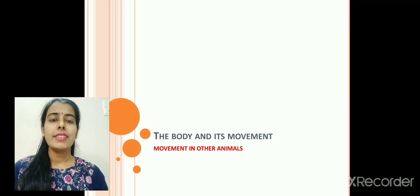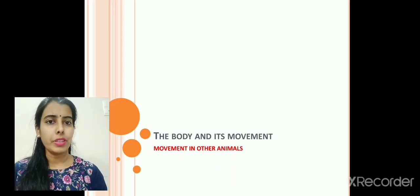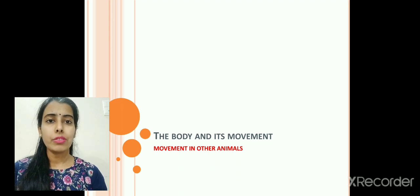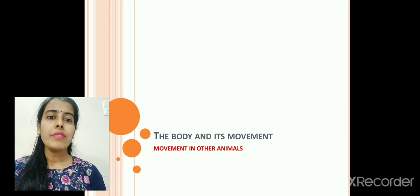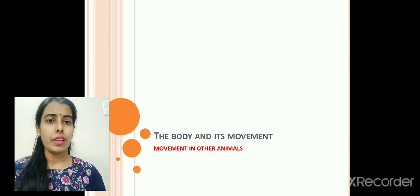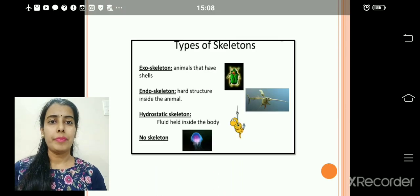Namaskar everyone. This is the fourth video for the chapter body and its movement. In our previous sessions we have learned about the number of bones, the different types of joints, and how muscles help in our movement. Today we will be learning how movement occurs in animals other than human beings.